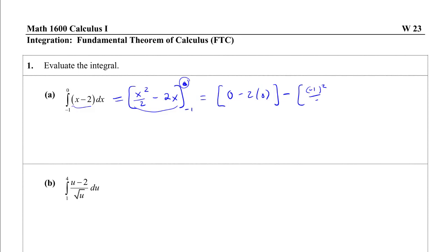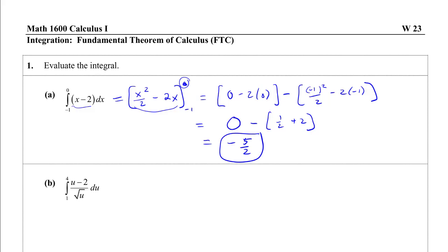At negative 1 we get negative 1 squared over 2 minus 2 times negative 1. The whole thing is 0 minus the quantity inside: 1/2 plus 2, which is 1/2 plus 4/2, giving us minus 5/2 as our answer.